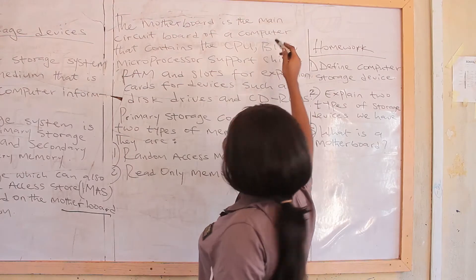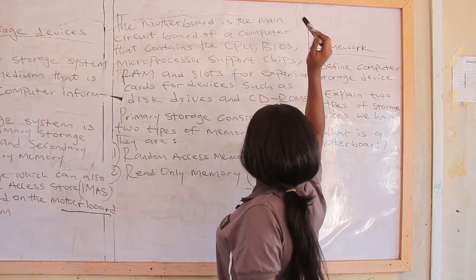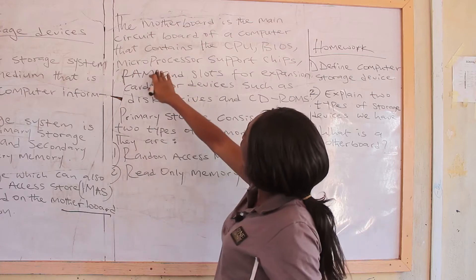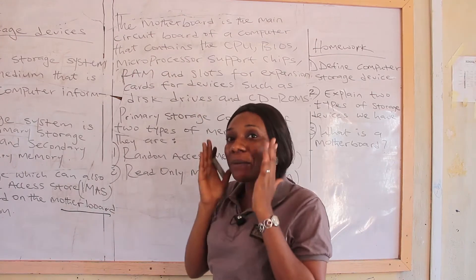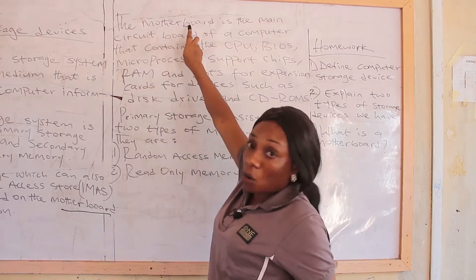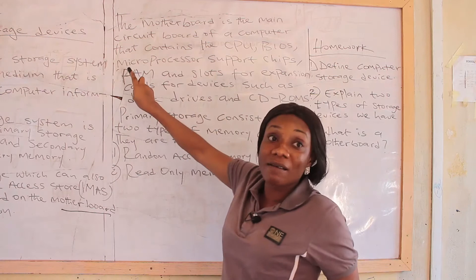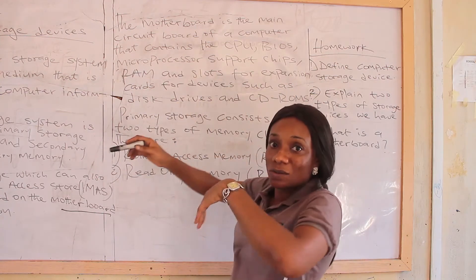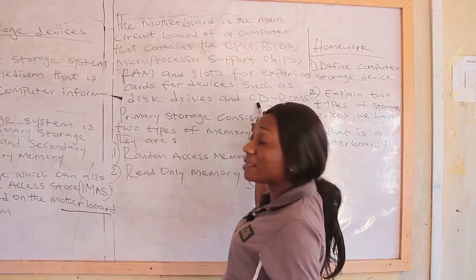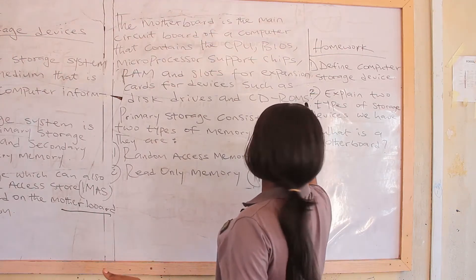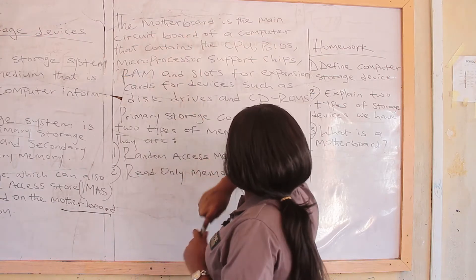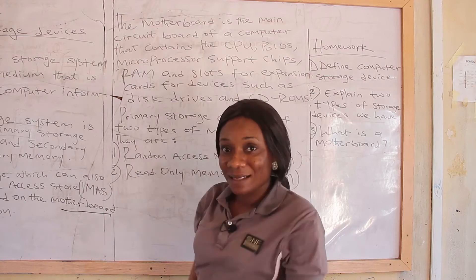We also have the BIOS, which is the basic input output system, also found on the motherboard. We have the microprocessor, which is the brain of the computer — it is also a chip. The RAM, which means random access memory, is also on the motherboard. We also have slots, cards, the disk drive, and the CD-ROM, which means compact disk read only memory. All these are found on the motherboard, which is the main circuit board of a computer system.